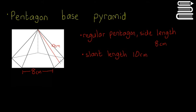That means from the middle of this line here to the top of the pyramid is 10 centimetres — that's straight through the middle of the triangle on the side. So it's the red line, not any of the black lines. The black lines are going to be a different length — they're going to be a little bit longer. And we need to find the surface area (SA) and the volume (V).